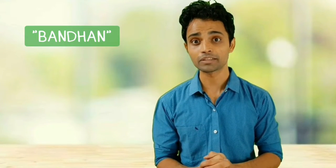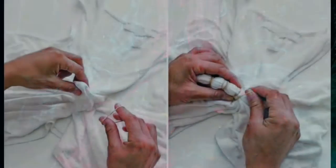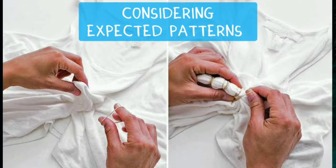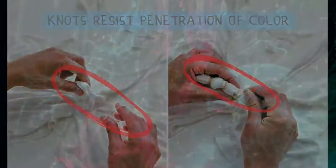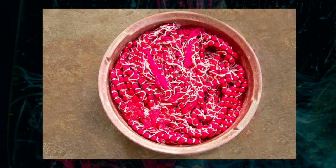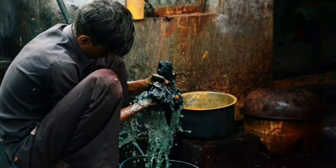Tie and dye basically has two techniques: first is bandhani, and second is ikkat. Bandhani is mostly used and made in two states of India — Rajasthan and Gujarat. The word bandhani comes from the Hindi word 'bandhan', which means to tie. In this technique, fabric is tied with strings or rubber bands as per the expected design. The knots of the string or rubber resist the penetration of color. After tying, the fabric is dyed in the desired color. Once the dye has dried, it is washed in water.